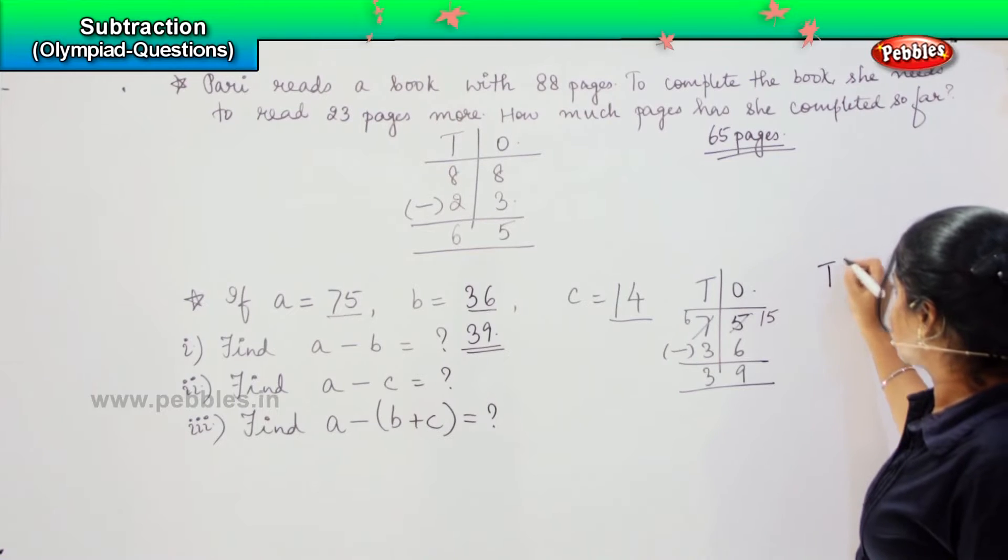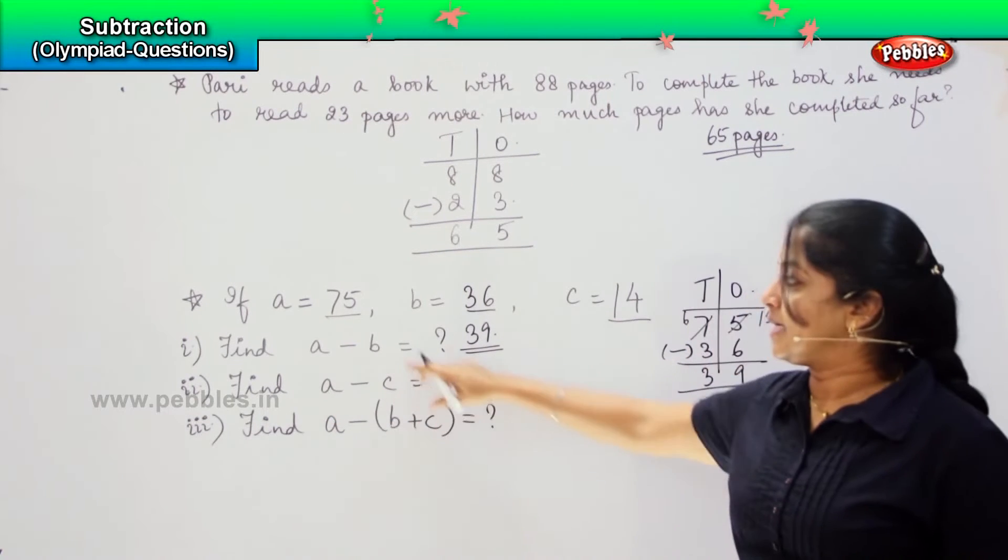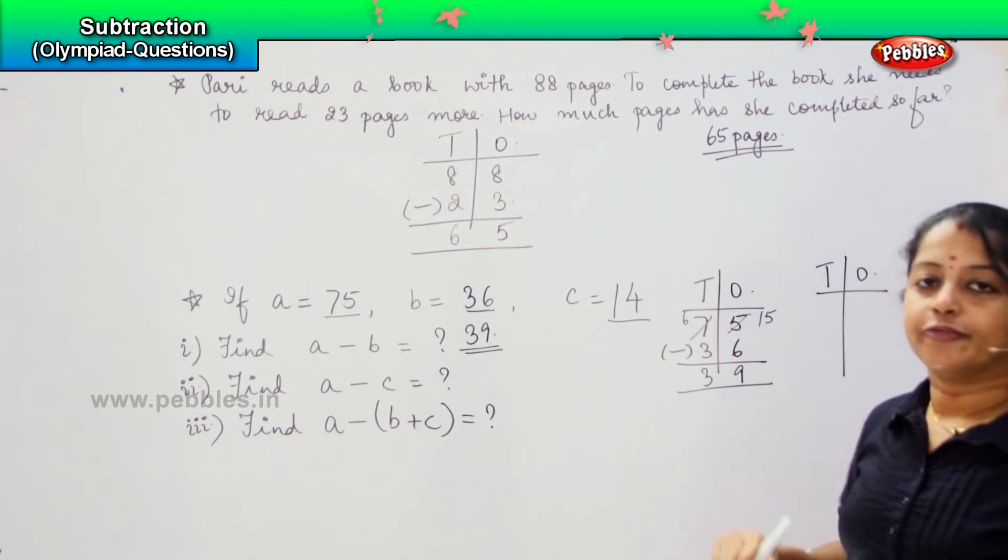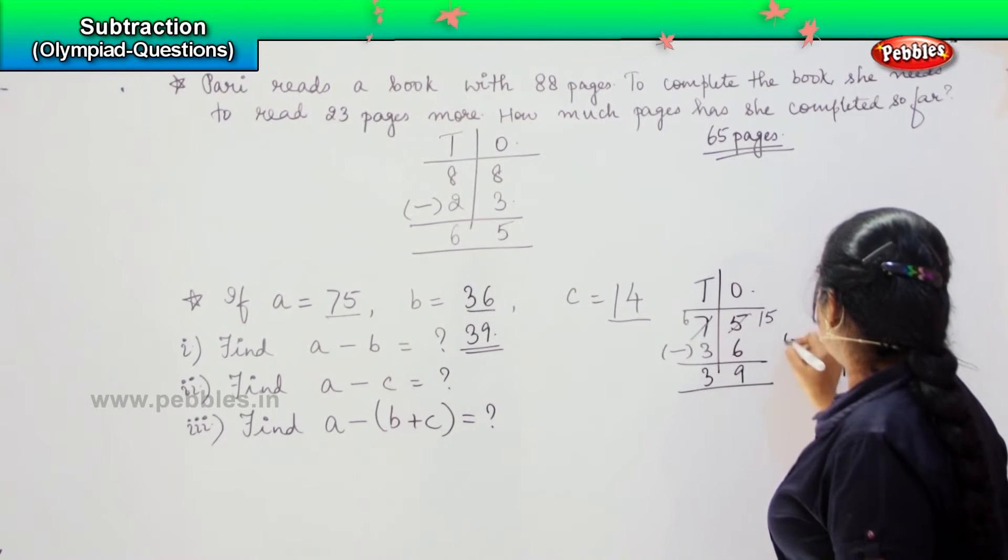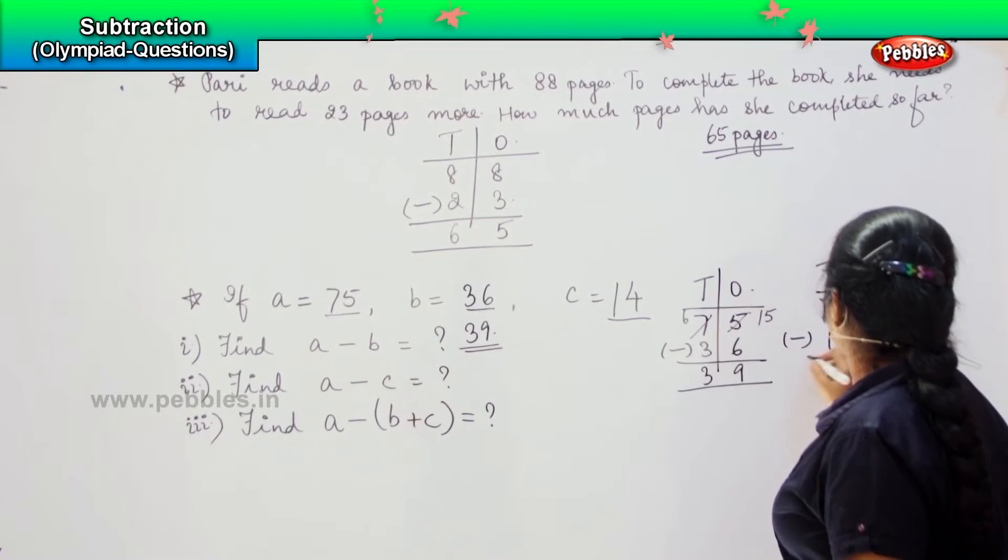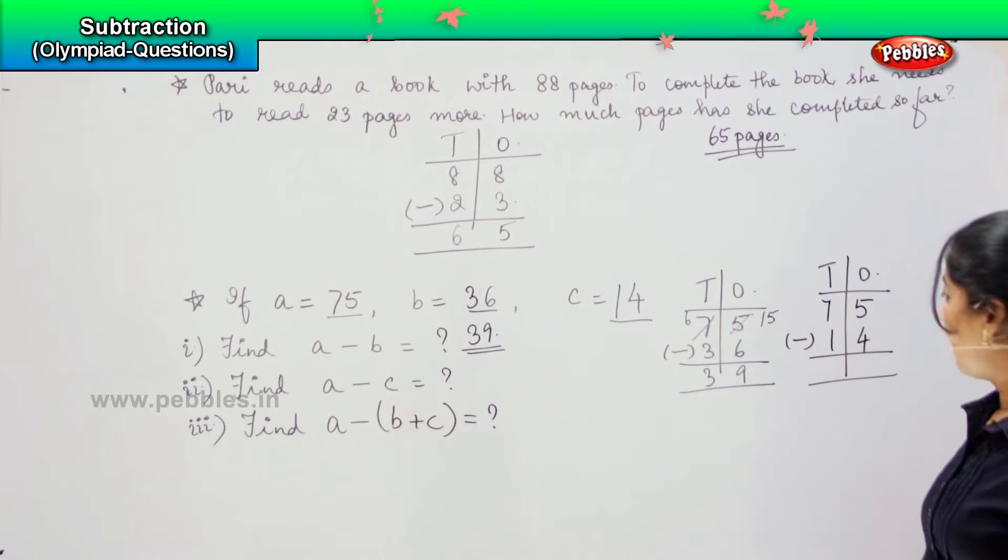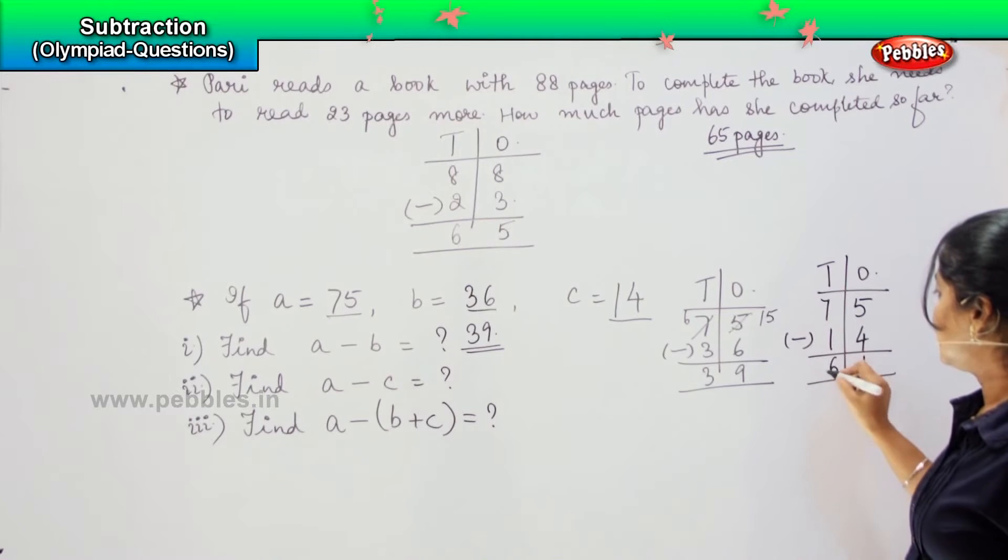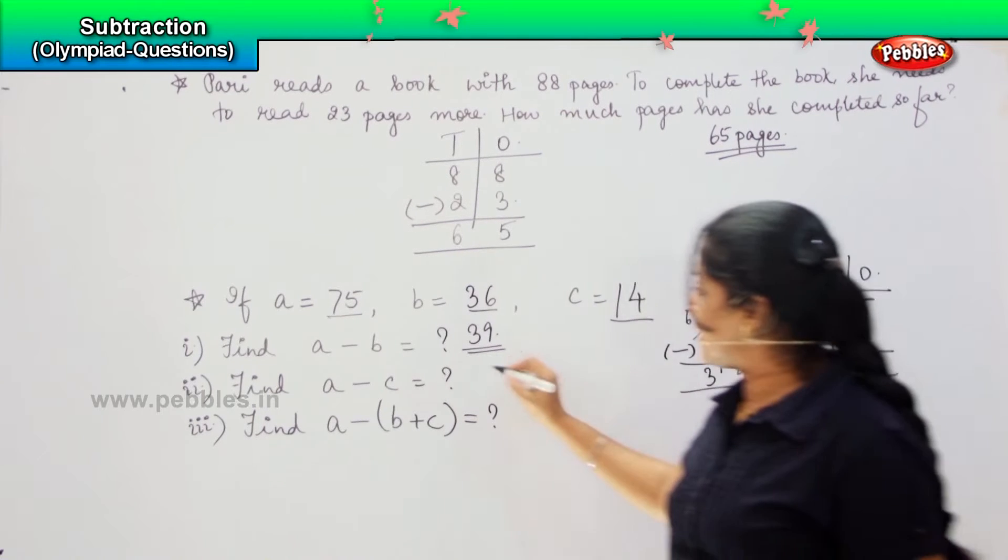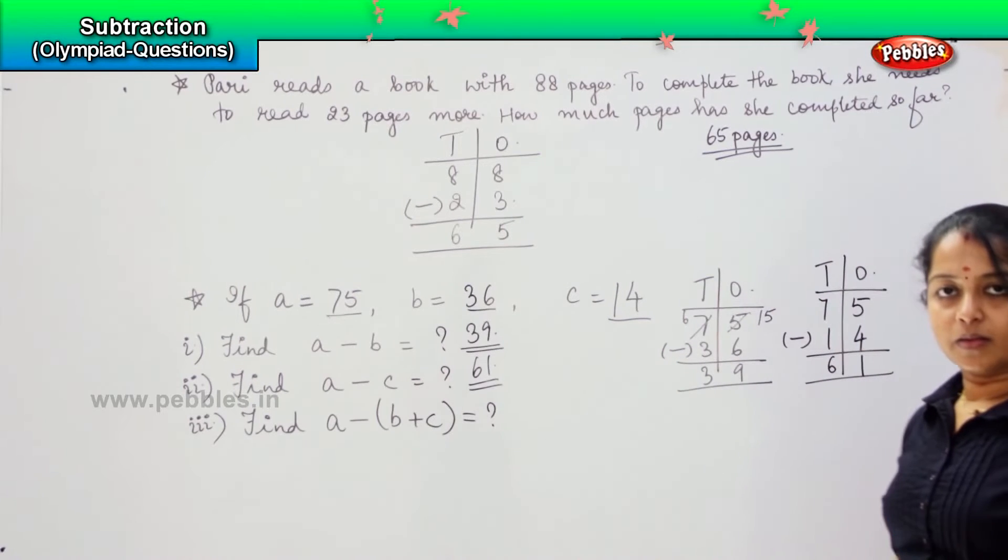The next one says that you need to find the answer A minus C, which is 75 minus 14. Since 5 is greater than 4, we need not have to borrow. 5 minus 4 is 1, 7 minus 1 is 6, so my answer here is 61.